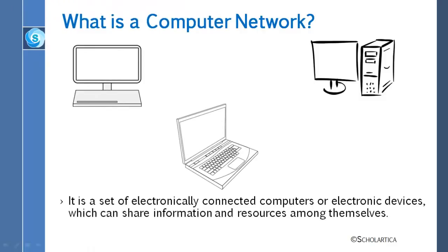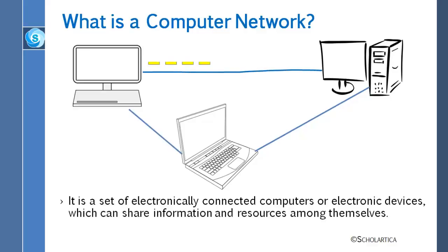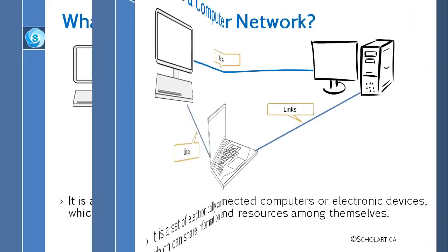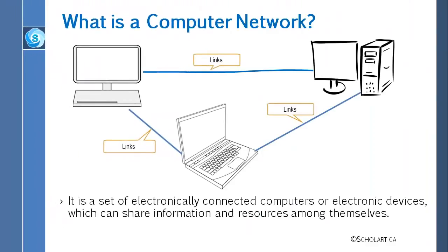So what is a computer network? A computer network is a very simple concept. It is a set of electronically connected computers or electronic devices which can share information and resources among themselves. There are communication protocols such as TCP/IP that define how this sharing should take place.